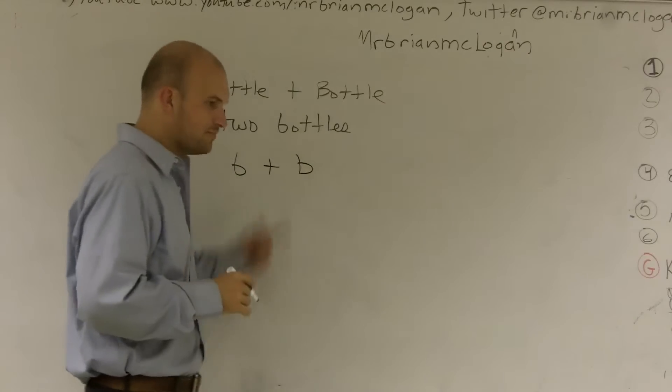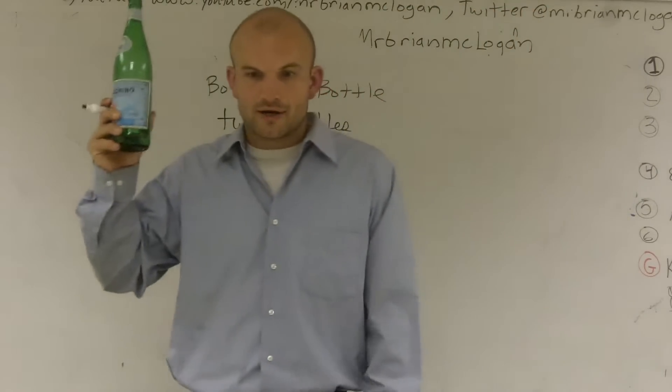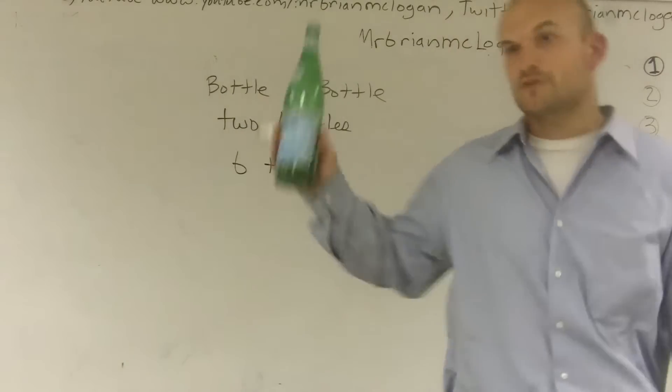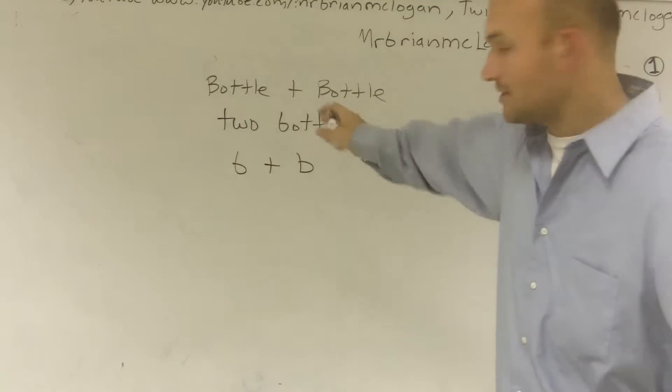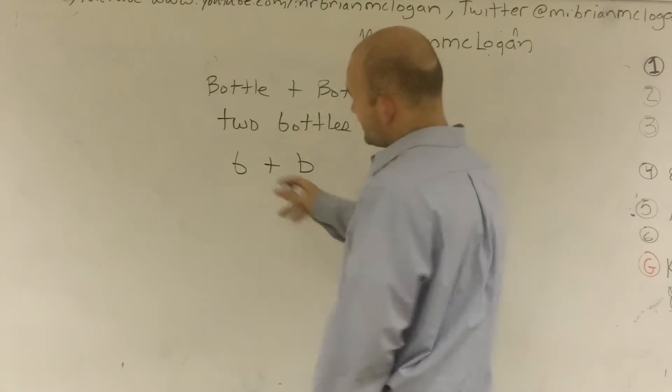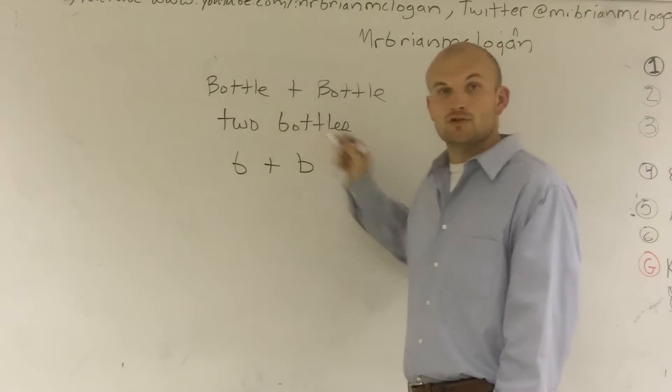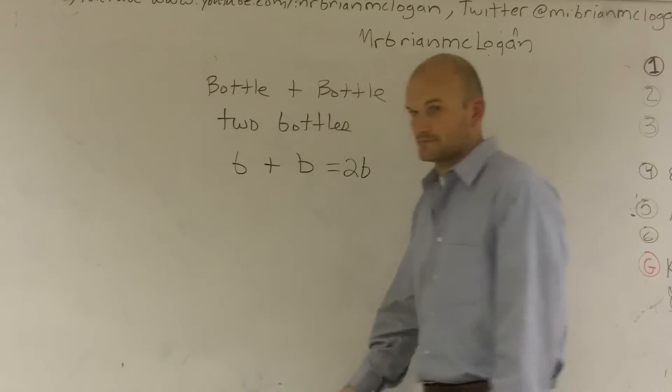So b represents my bottle. Rather than telling you, here's my bottle, I'm going to let the letter b represent it. So rather than always having to show all these bottles, I'm just going to have a letter b represent that. So if I was going to say b plus b, which is really bottle plus bottle, it's going to equal two bottles, or what we could write as 2b.